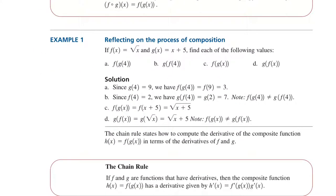In the first example, F of x is given as root x, G of x is given as root x plus 5, and we are looking for F of G of 4. G of 4 is 9, F of G of 4 is F of 9, which is 3.